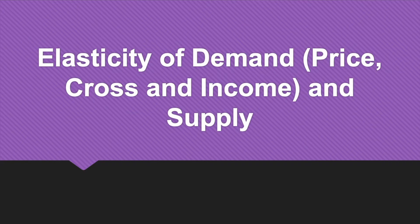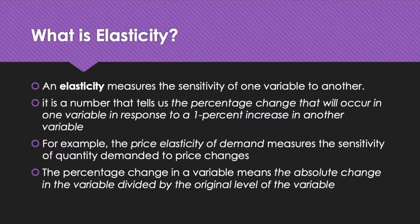Today we look at the concepts of elasticity of demand and supply. We know that if the price of a commodity increases, the quantity demanded will fall and the quantity supplied will rise. Often we want to know how much the quantity supplied or demanded will rise or fall — how sensitive is the demand or supply of a variable to its price. Elasticity measures the sensitivity of one variable to another; specifically it is a number that tells us the percentage change that will occur in one variable in response to a 1% increase in another variable. We use elasticities to answer questions about the quantity supplied and demanded of a commodity and its price.